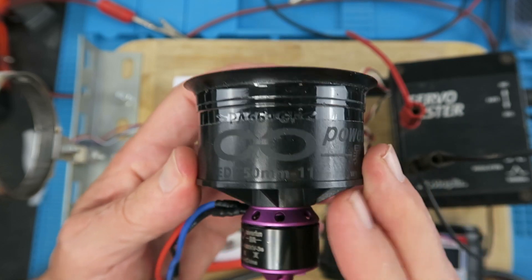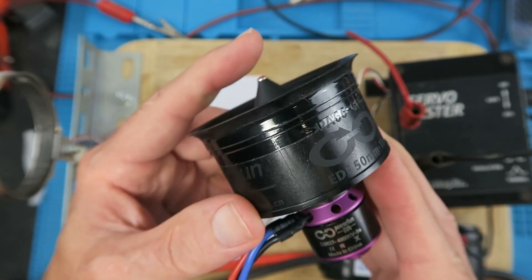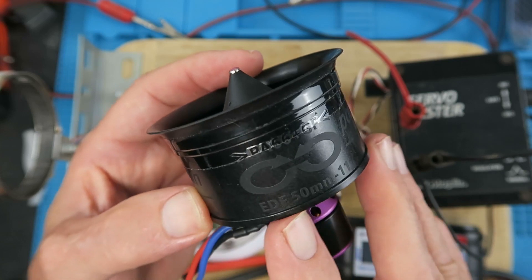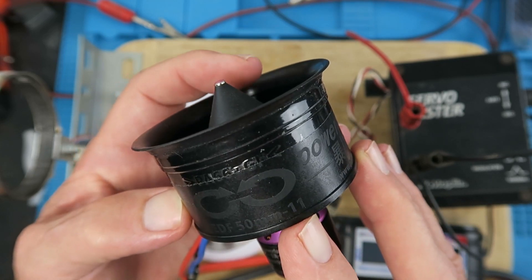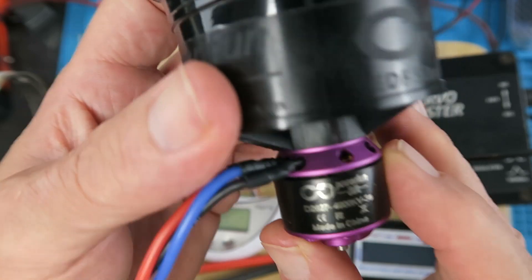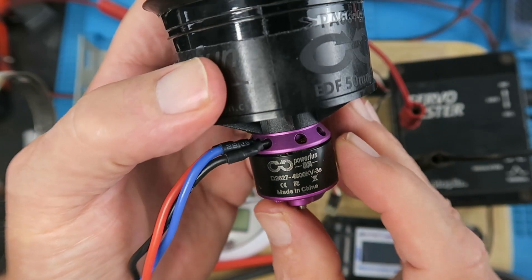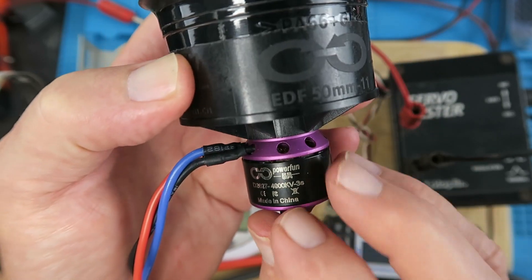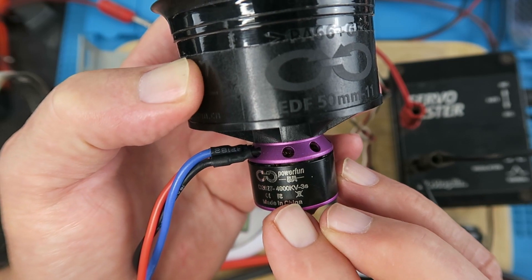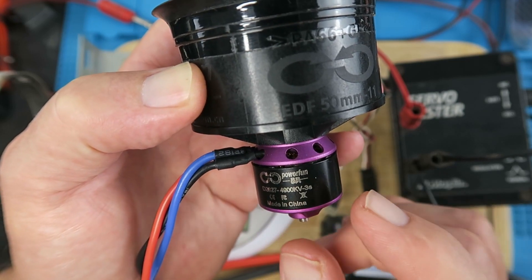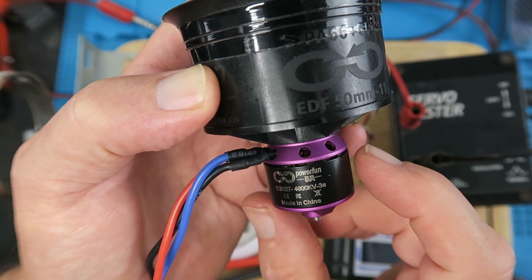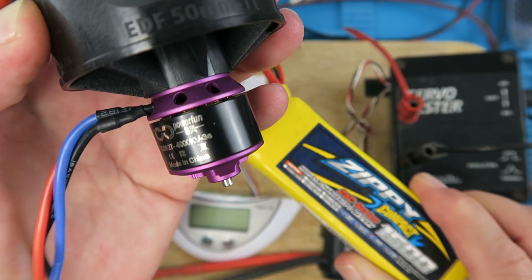The specification of this unit, not sure if you can see it in the molding here, it's a 50 millimeter fan with 11 blades. The power unit is a 4900 kV motor suitable for three cells.